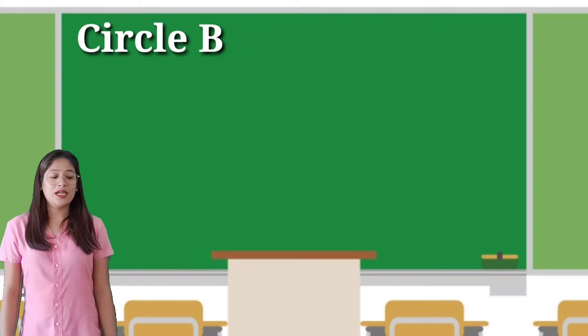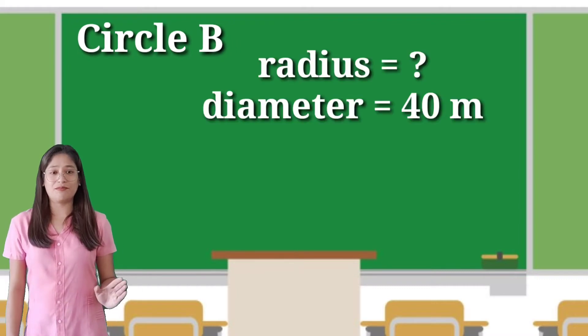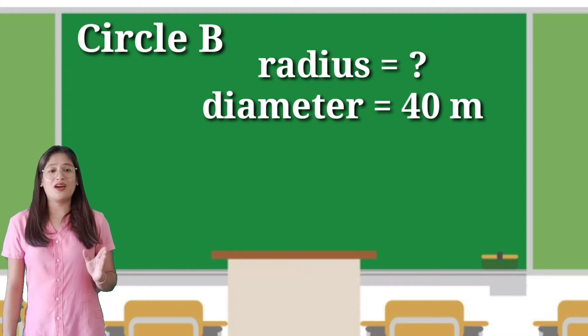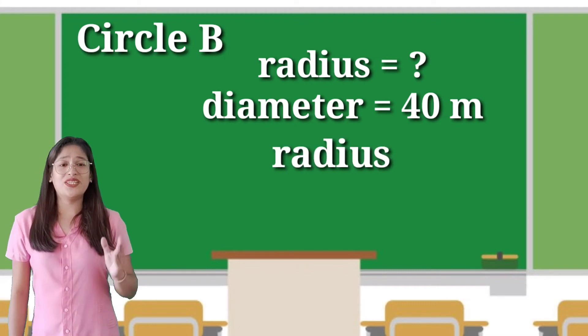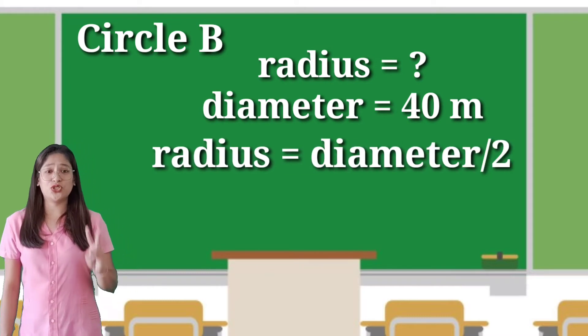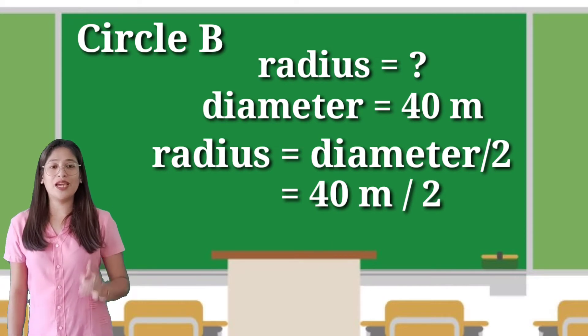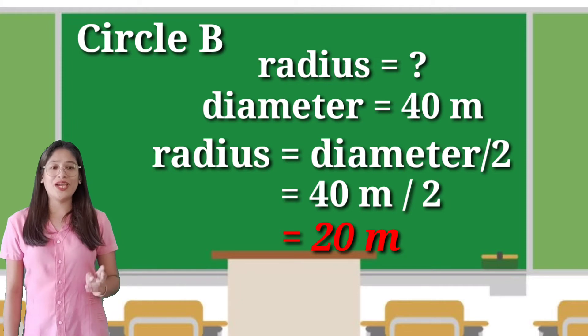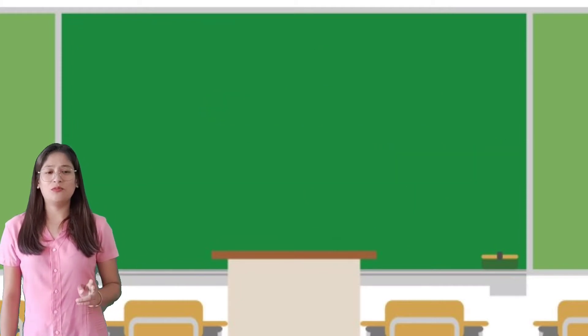Circle B. The radius is not given. The diameter is given. How will we find the radius? It's simple. We will divide the diameter by 2 to get the radius. The diameter is 40 m. We will divide it by 2 and get 20 m. The radius in circle B is 20 m.